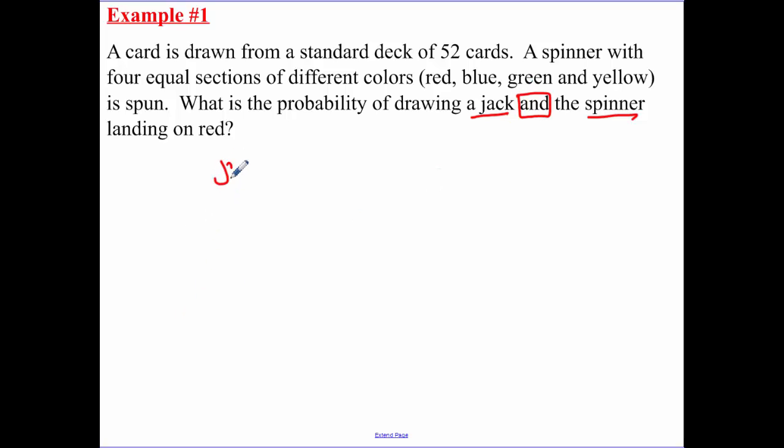Let's do the probability of our jack. You need to know that in a deck of 52 cards, there are four jacks. Our spinner landing on red - one out of four possibilities are red. So our answer is one out of 52.